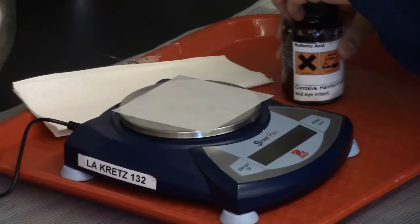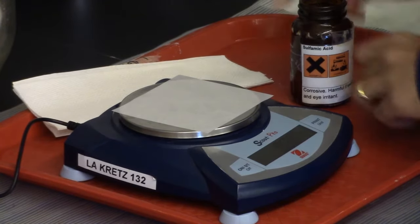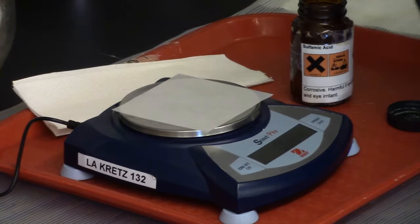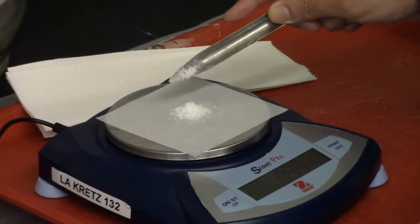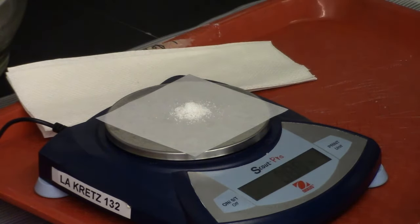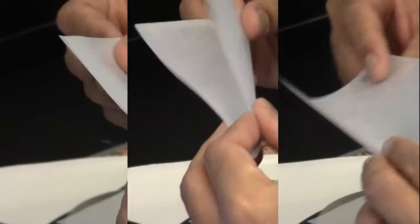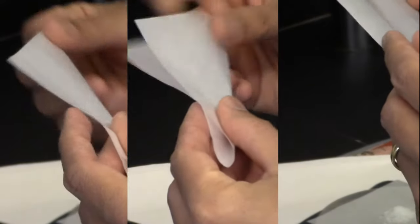Weigh out about 1 g of sulfamic acid on a weighing paper using a centigram balance. Label 3 more weighing papers. Fold papers on the diagonal.